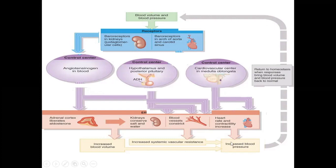We are able to live without antihypertensive drugs up to a certain age as long as blood pressure is normal. Whenever something goes wrong and there is abnormal secretion of these peptides, problems such as hypertension or hypotension arise and drugs are needed to prolong life. I hope you have gained a good understanding of all these vasoactive peptides, their mechanisms of action, and their effects in the human body. Thank you.